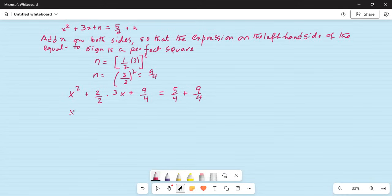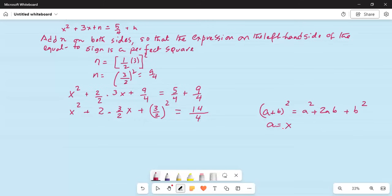This expression on the left hand side can be written as x square plus 2 times 3 by 2x plus 9 by 4, we know is 3 by 2 square, is equal to on the right hand side common denominator is 4, 9 plus 5 is 14. Now if you remember the perfect square a plus b square is equal to a square plus 2ab plus b square.